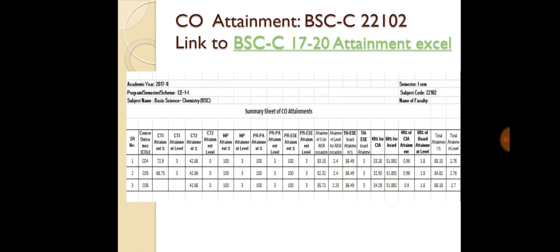We will take the example of CO attainment of one subject: Basic Science Chemistry. In the CO attainment, we have to mention the academic year, semester, program semester scheme, subject code, subject name, and name of faculty. In the summary sheet of CO attainment, column-wise we can mention course outcomes CO4, CO5, CO6, thereafter CT1, CT2, micro-project (MP), PRPA, PRESE, and THESE.